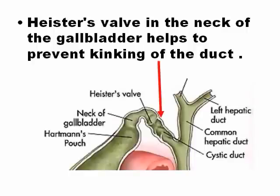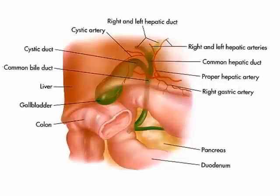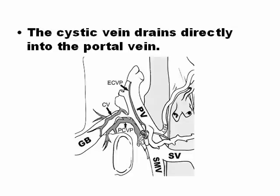Heister's valves are in the neck of the gallbladder. They are not truly physiological bulbs, but they can be asked about on the RDMS or other examinations. Regarding vascularity of the gallbladder: the blood supply comes from the hepatic artery, which has a small branch called the cystic artery that gives blood to the gallbladder. The cystic vein drains directly into the portal vein, which is a very large vein nearby and also part of the digestive system. So the artery is from the hepatic artery, and the vein drains to the portal vein.